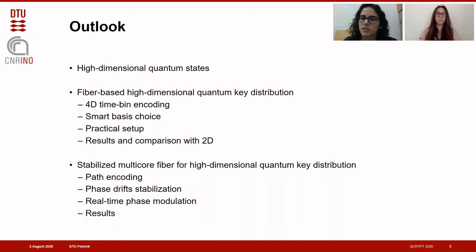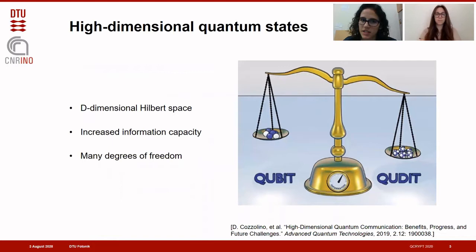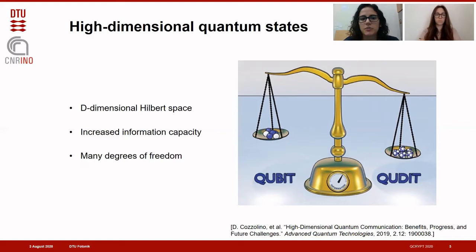A qubit is the quantum state associated with a single bit of classical information, as it can be represented with any physical system with two different levels. More generally, a qudit is the quantum state belonging to a d-dimensional Hilbert space, and thus it corresponds to a system with d levels. In order to prepare a high-dimensional state, we have to enlarge the set of degrees of freedom of our system, which makes it possible to carry more than one bit of information and thus to increase the information capacity of the system.